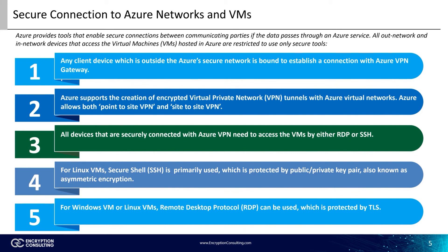All devices that are securely connected with Azure VPN need to access the VMs by either RDP or SSH. Linux VMs allow both Secure Shell and RDP, although primarily SSH, which is protected by public-private key pairs and asymmetric encryption. For Windows VMs, only Remote Desktop Protocol, or RDP, can be used, which is protected by TLS.